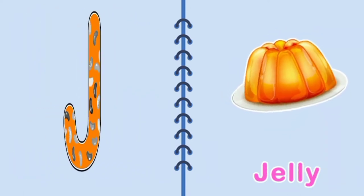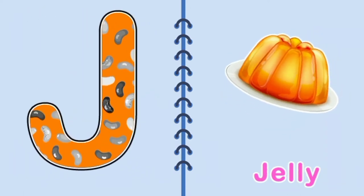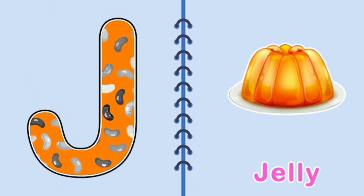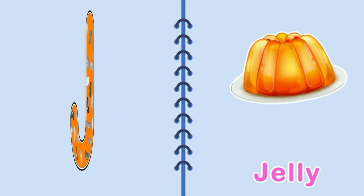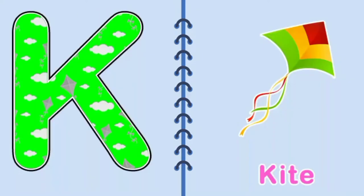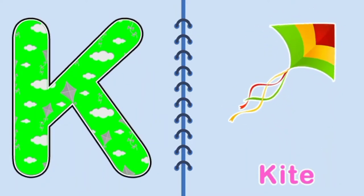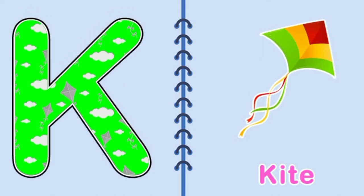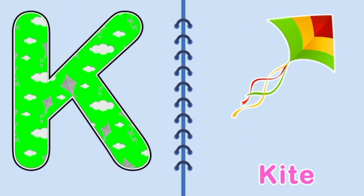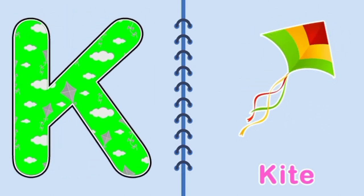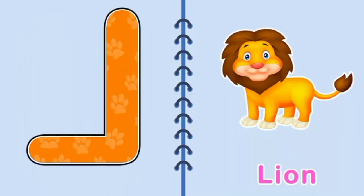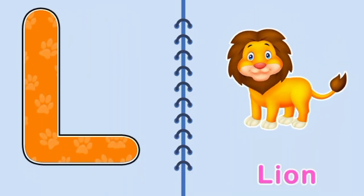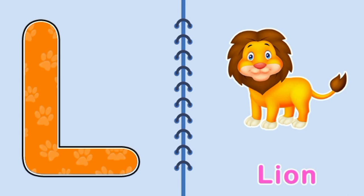J, J, Jelly, J for Jelly. K, K, Kite, K for Kite. L, L, Lion, L for Lion.